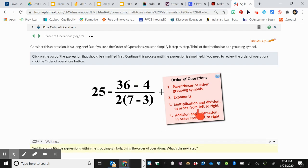Then I'm going to multiply and divide in my numerator. There is no multiplication and division. Then I go on to addition and subtraction. 36 minus 4 equals 32.